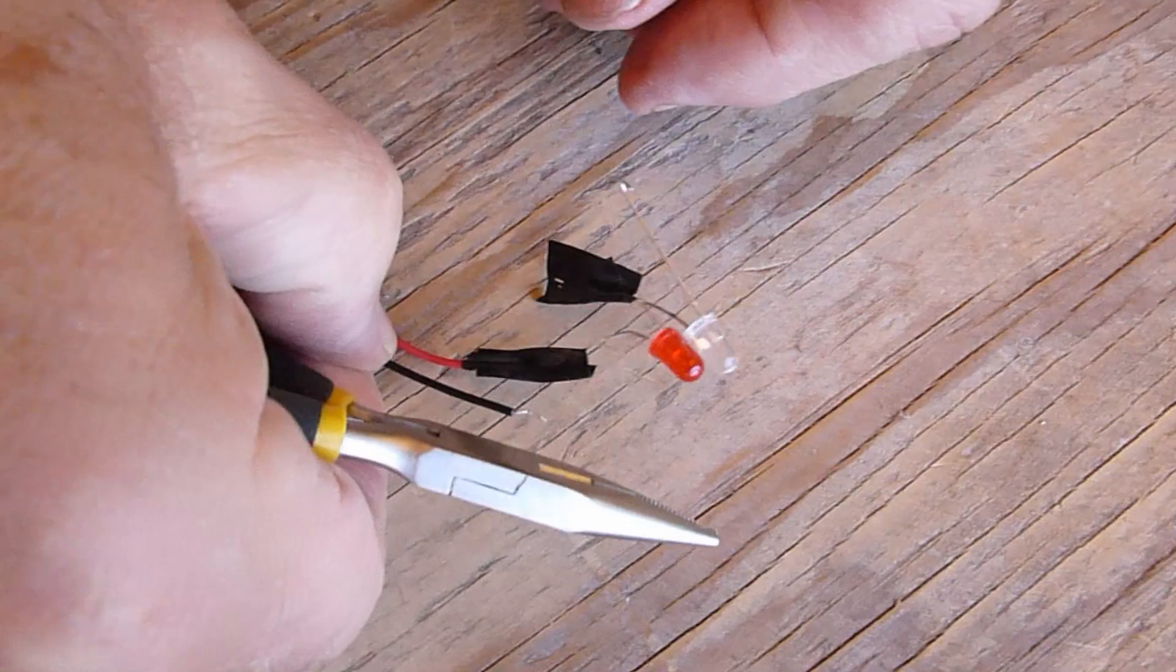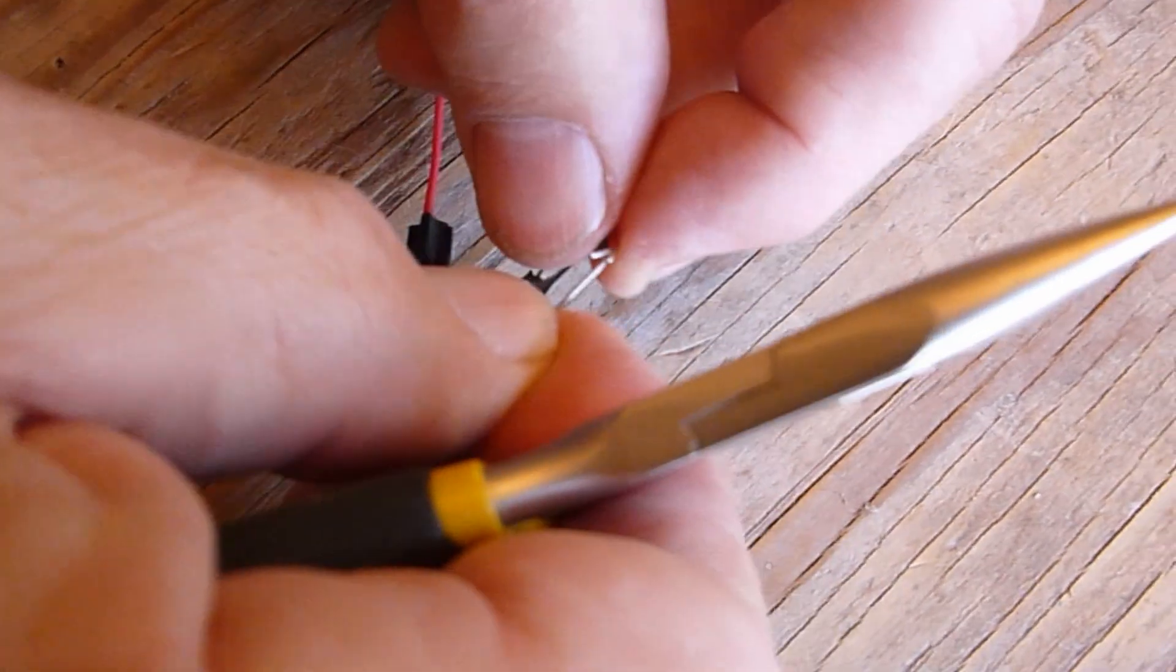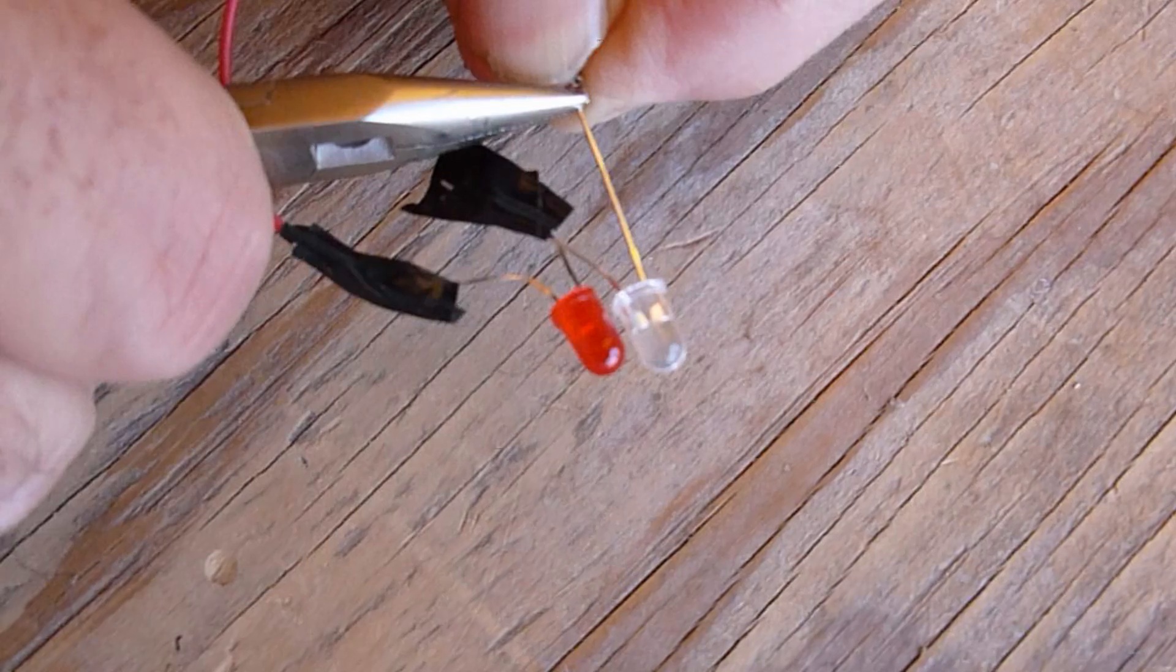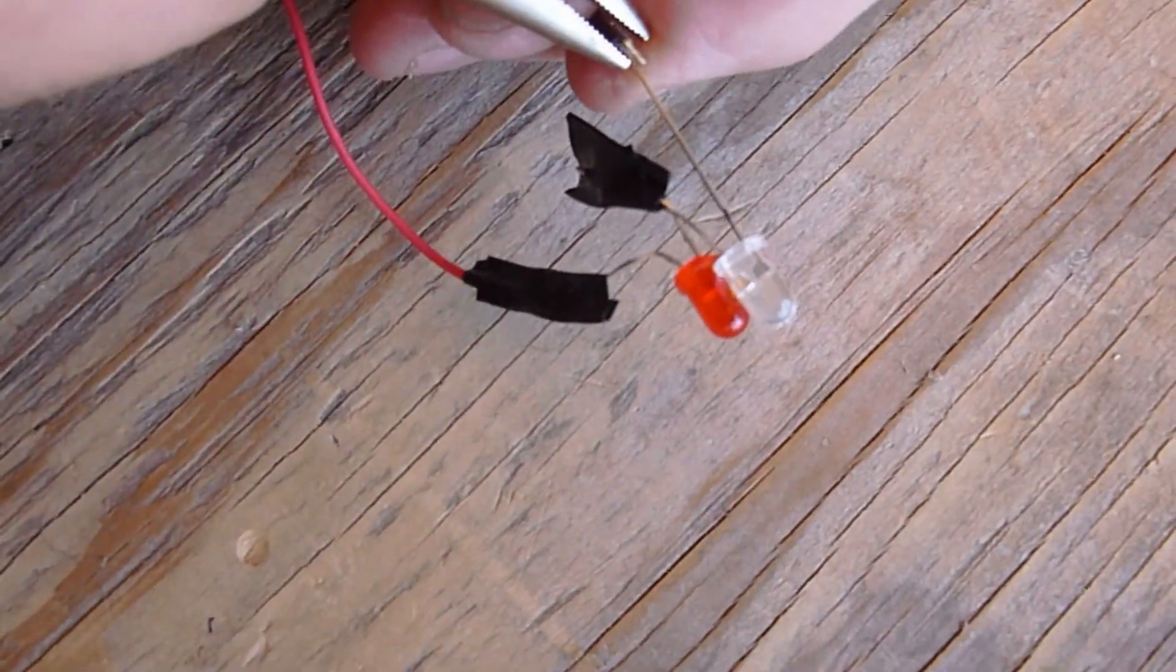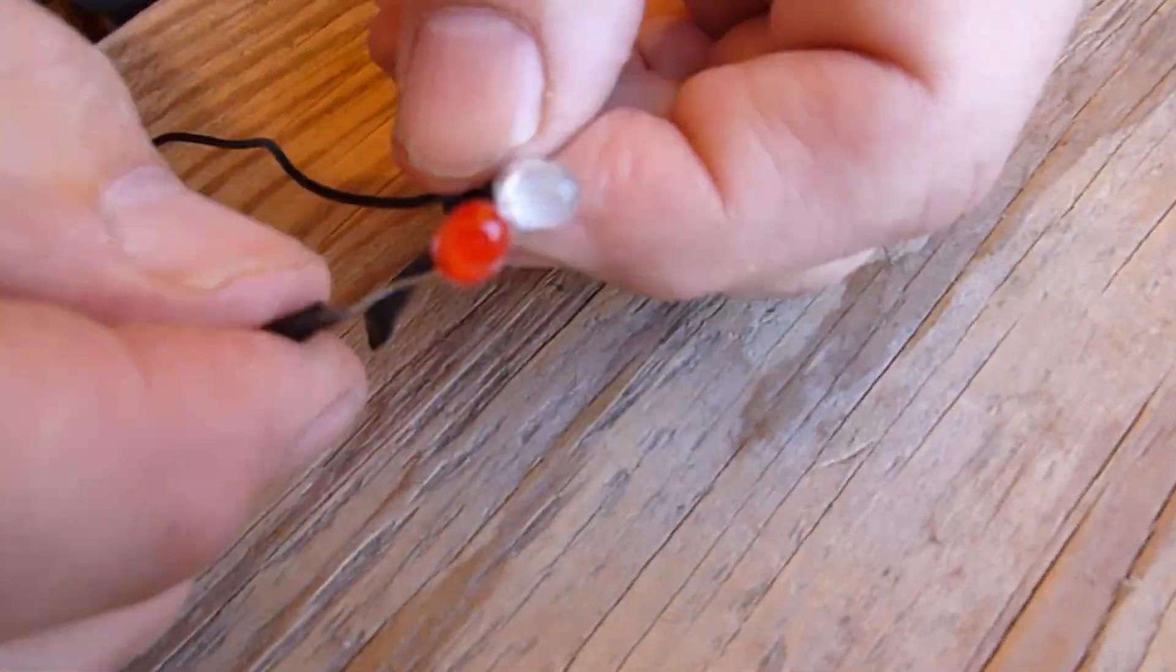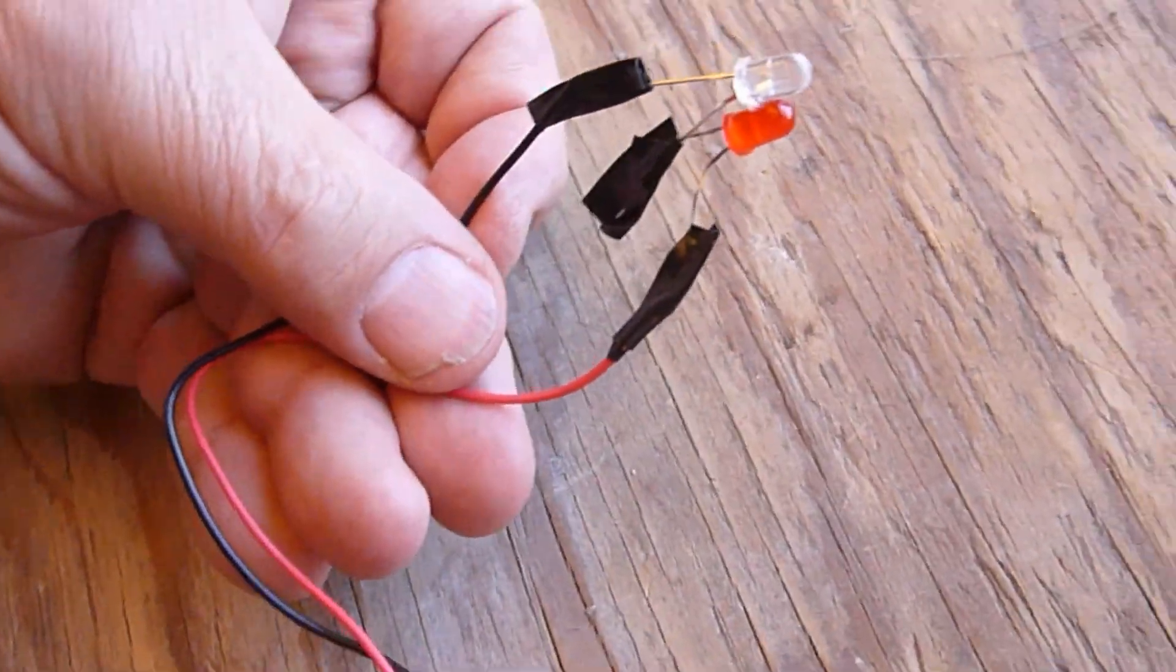Similarly, connect the battery's black lead to the longer lead of the phototransistor. This completes the wiring.